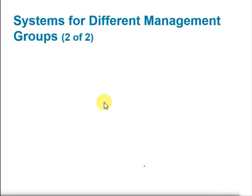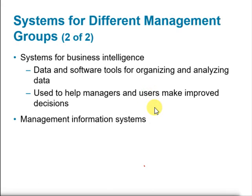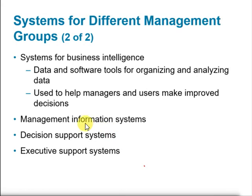The next category is the management information system. But before that, I would like us to understand what we mean by business intelligence. Business intelligence software supports decision support systems used by middle and senior management. Systems for business intelligence are data and software tools used for organizing and analyzing data to help managers make improved decisions. The next categories of information systems are management information systems, decision support systems, and executive support systems.